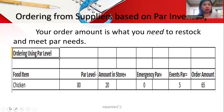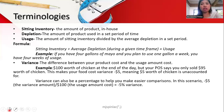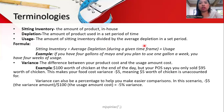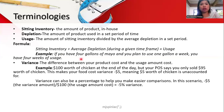Here are essential inventory management terminologies. Seating inventory is the amount of product you have on hand. Depletion is the amount of product used in a set period of time. Usage is the seating inventory divided by the average depletion in a set period. For example, if seating inventory is 4 gallons and average depletion is 1 gallon per week, the usage is 4 weeks.